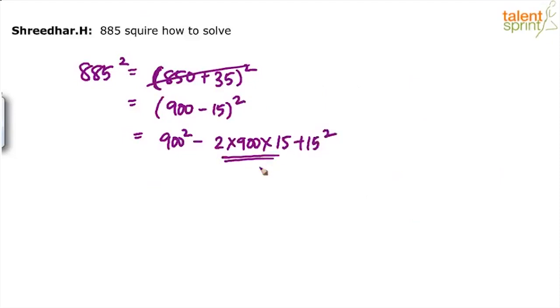Now this 2 into 900 into 15 is the most important calculation because anyway, we all know that a square is 900 square, b square is 15 square. What matters is this minus 2ab part.